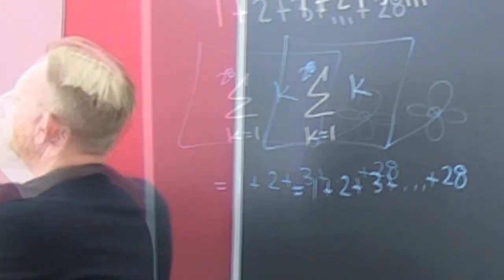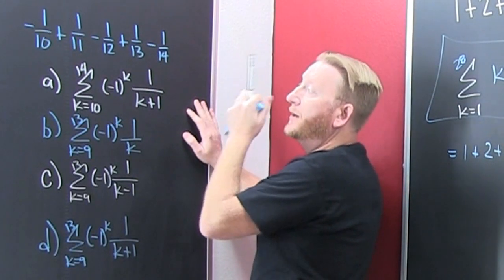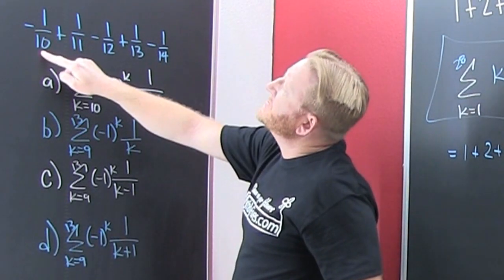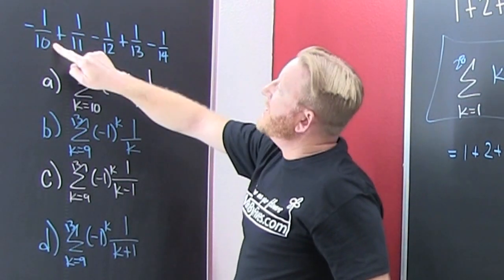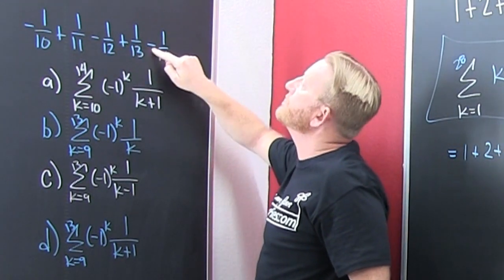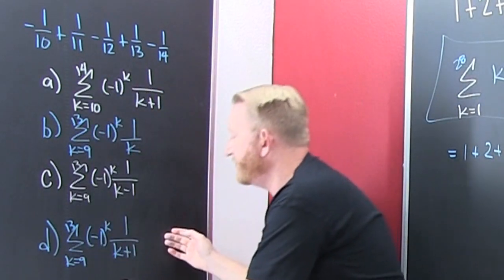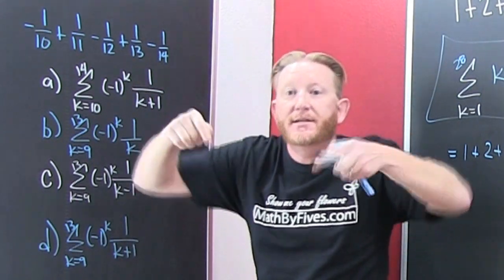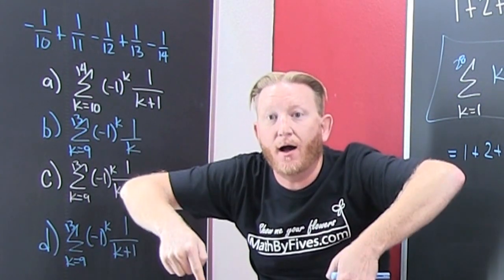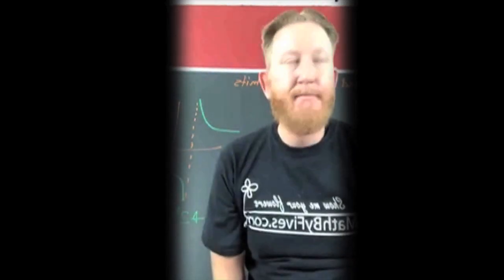But one more. What if they gave you: minus 1/10 plus 1/11 minus 1/12 plus 1/13 minus 1/14? I've given you a choice of 4 — put your answers down below. Let's define the sum.